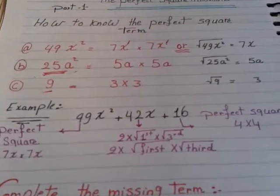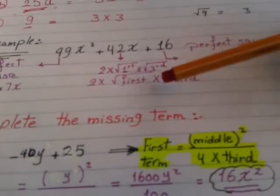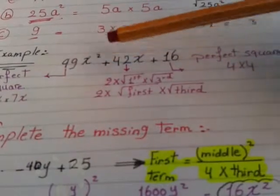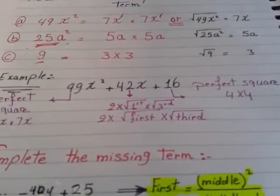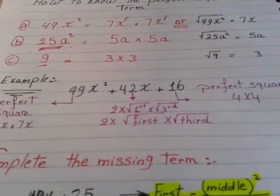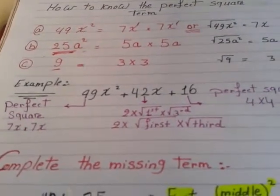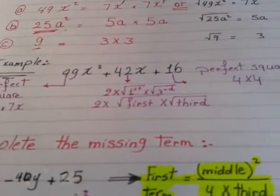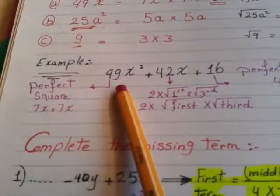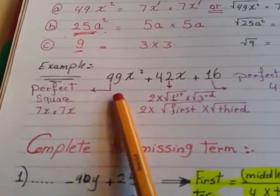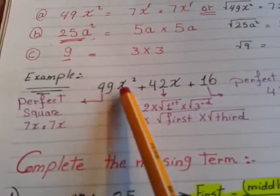Our example will be in the first example. 49x² plus 42x plus 16. The problem is like this and I will ask you to factorize. Because from the beginning, how can I know this is perfect square trinomial or not? I have a secret or key to know this is perfect square trinomial or not.